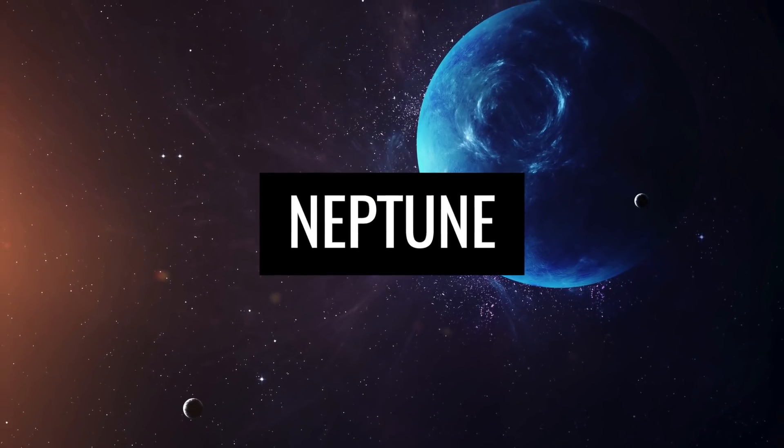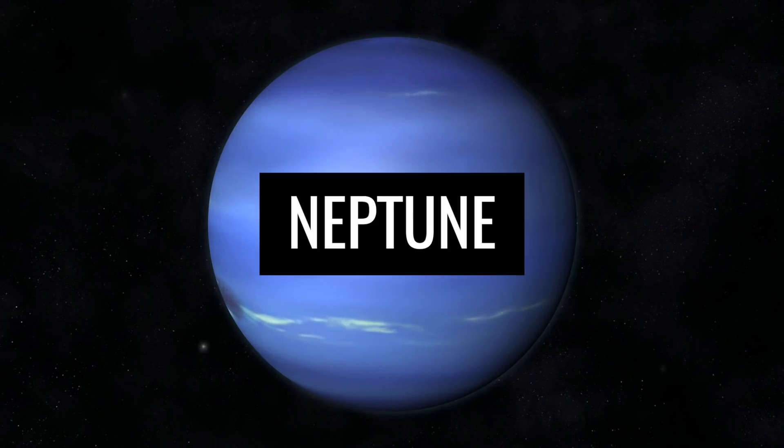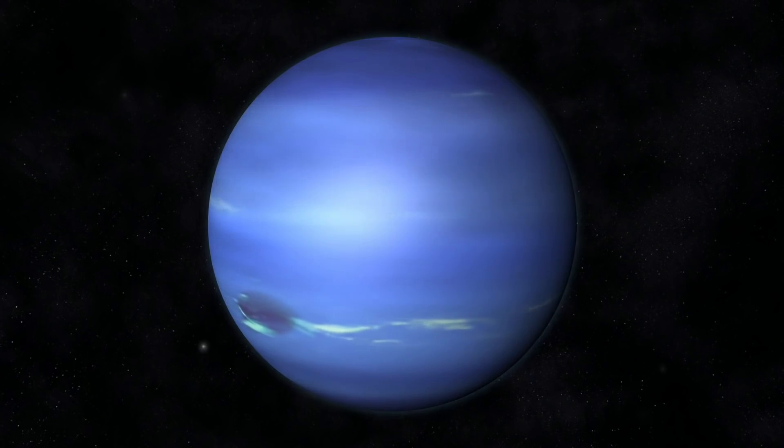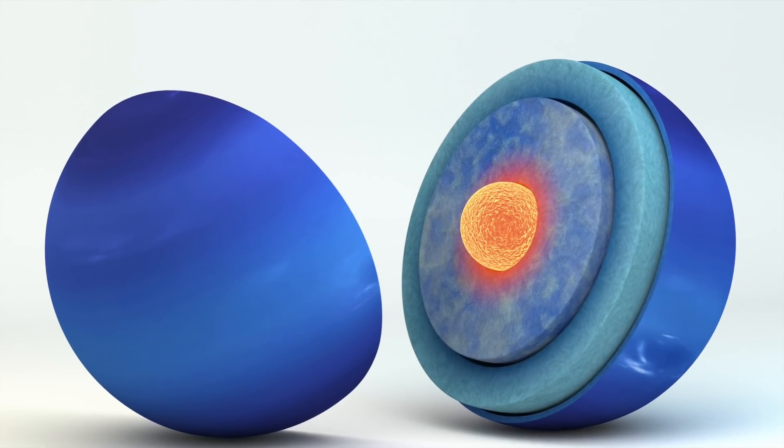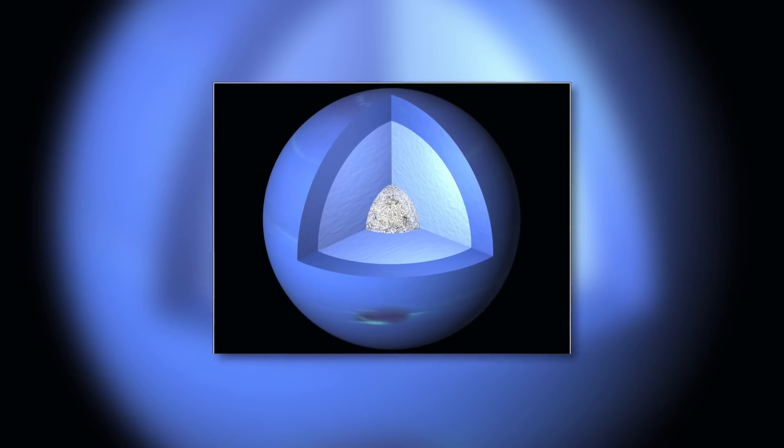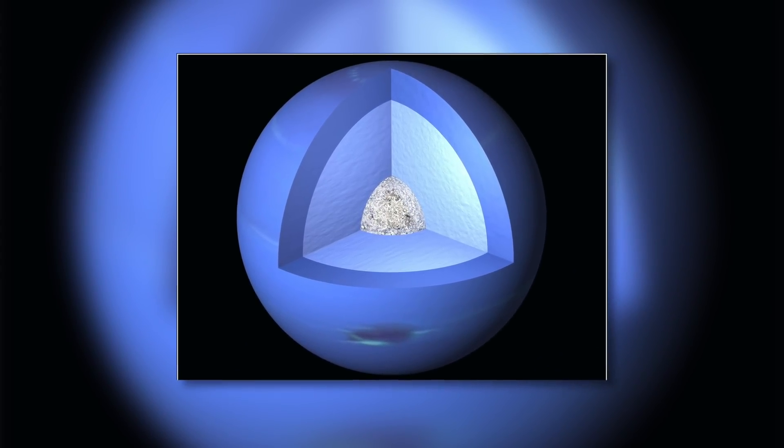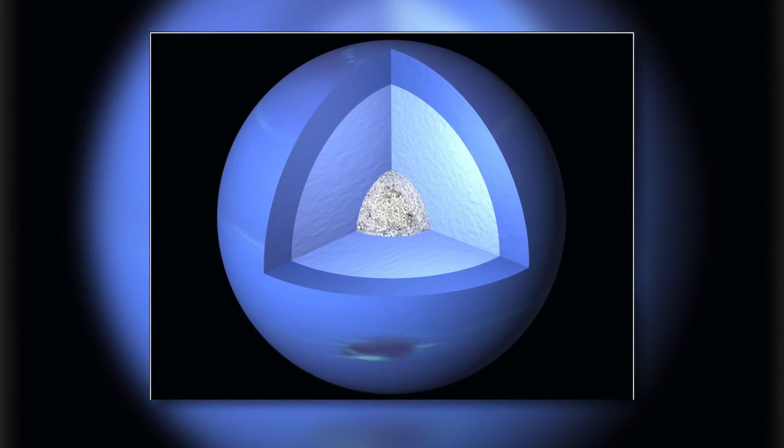Neptune, Uranus' Twin Planet. The last gas planet, Neptune, is often called the twin of the planet Uranus. This is because its inner structure resembles Uranus quite markedly. Neptune also has an Earth-sized core of rock and metal, which is surrounded by a layer of water, ammonia and methane ice.